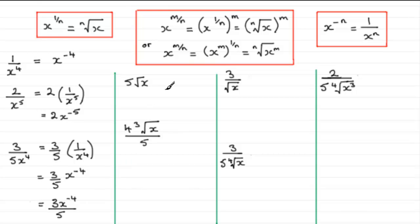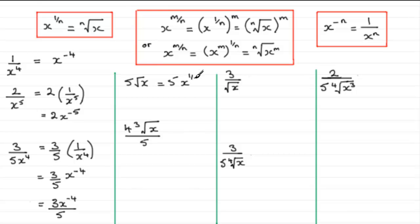When it comes to dealing with square roots, we use the fractional exponent rule. We've got 5 times the square root of x. For a square root, n is 2, so the square root of x becomes x to the power 1 over 2, that is x to the power a half. So this gives us 5x to the power a half.